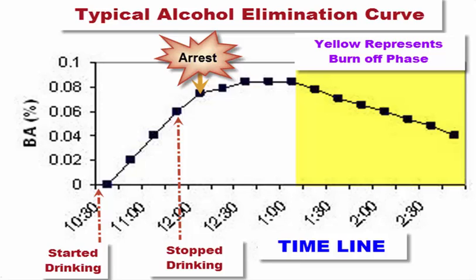The phrase "how to calculate BAC" has been searched millions of times each year on the Internet, and yet 1.5 million people or more in the USA are arrested for DUI-DWI offenses. Some of these are felony DUI cases, and others are for misdemeanor offenses, yet the license consequences and the criminal penalties for a DUI conviction are devastating in either case.